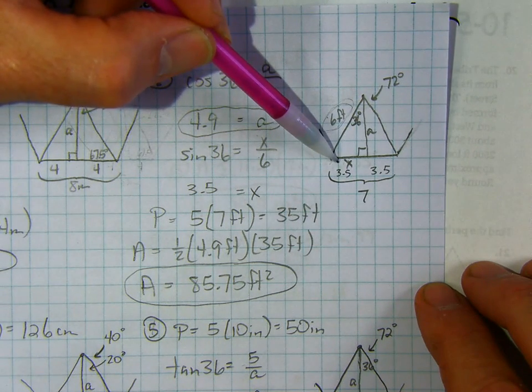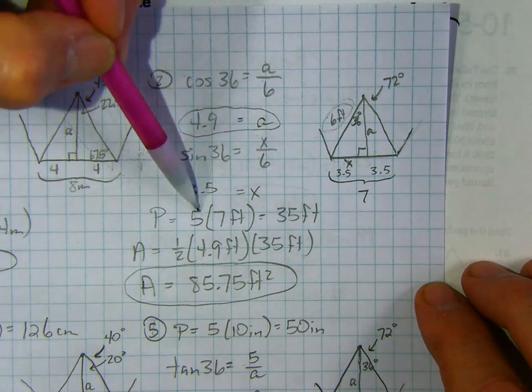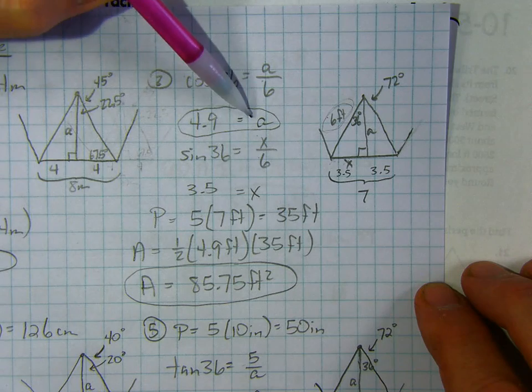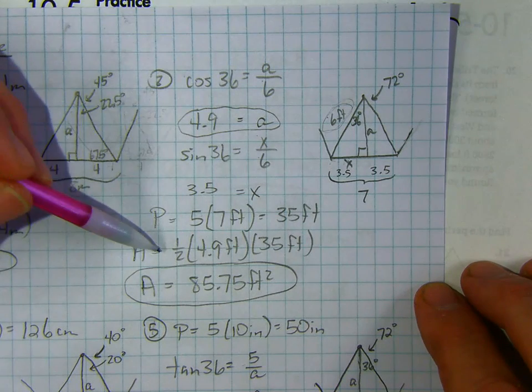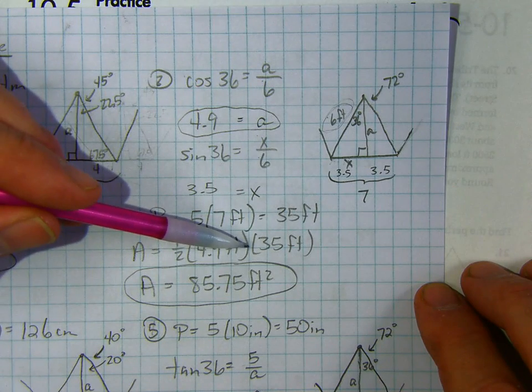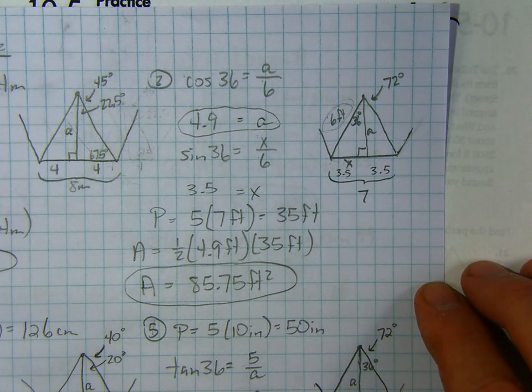And then for this perimeter, it's a pentagon, so 5 times 7 is 35 feet. So the perimeter is 35 feet. The apothem is 4.9 feet. So the area is 1 half of 4.9 feet times 35 feet, the perimeter, and I got 85.75 feet squared.